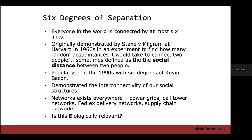When they did this experiment, what they found was that there were six degrees of separation between all these people. In the 90s, it was popularized with the Kevin Bacon game, where you could connect Kevin Bacon to any other actor based on six steps of separation. Kevin Bacon was the star apparently that you could use back then in the 80s and 90s.